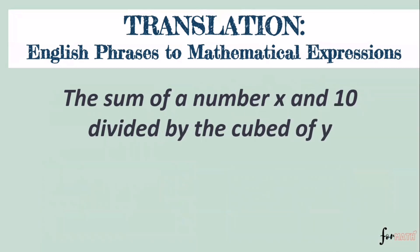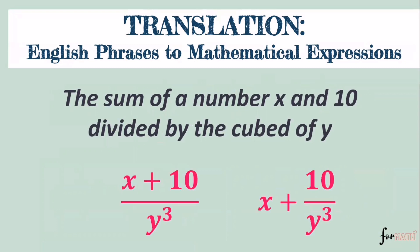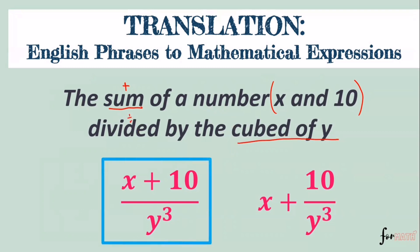Next: 'The sum of a number x and 10 divided by the cube of y.' The sum of x and 10 gives x + 10, divided by the cube of y, so the answer is (x + 10) / y³. Note: if a comma is placed after 'x' in the phrase, it changes the grouping — the sum would be just x, and then 10 divided by y³ is added. So punctuation matters. That's how we translate English phrases to mathematical expressions.